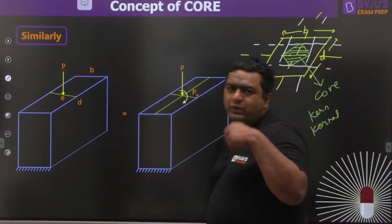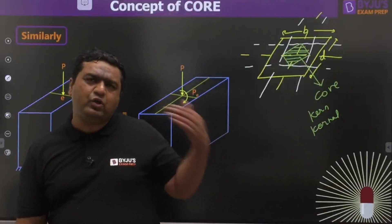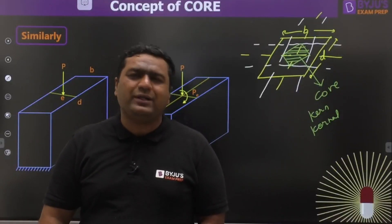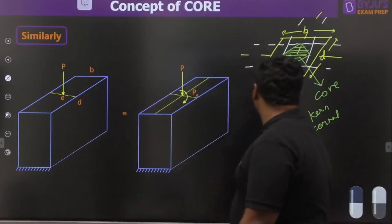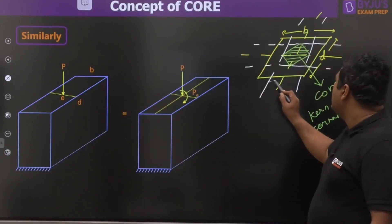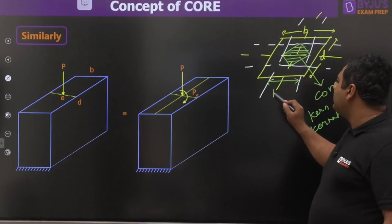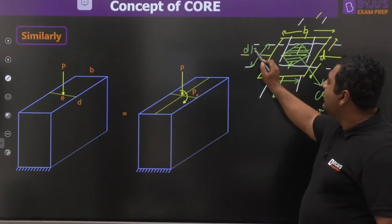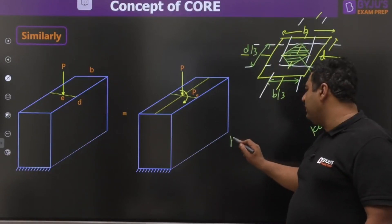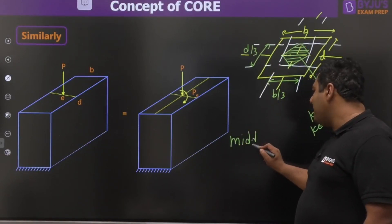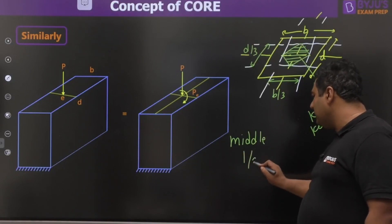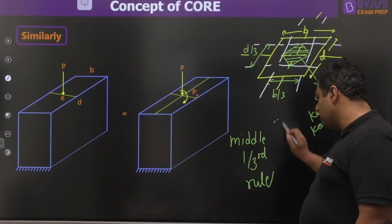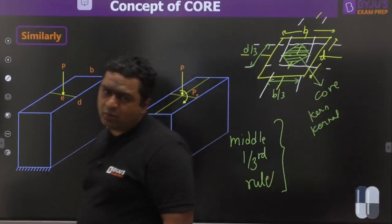In this core region, anywhere you place your load, you will find there is no tension in the column. As this region covers one-third of the width and one-third of the depth, it is also given the name of the middle one-third rule. It is called 'middle' because it uses the middle one-third part of the cross section.